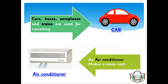Next one is car. Cars, buses, aeroplanes, and trains are used for travelling. We use them for travelling. If you have to go somewhere or come somewhere, you can use them quickly. We can use them to travel from one place to another place.